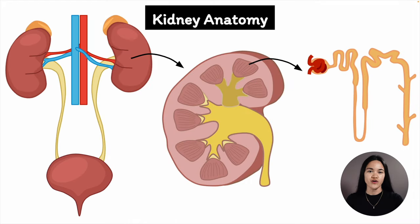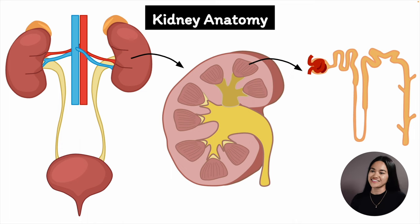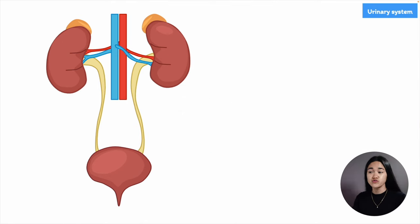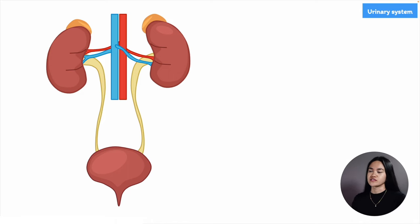In this video we're going to cover the anatomy and overview functions of the kidneys and urinary system. Let's start by taking a look at the frontal overview of the urinary system and then zoom into each structure and break it down in further detail. The urinary system consists of the two kidneys, ureters, urinary bladder, and urethra.